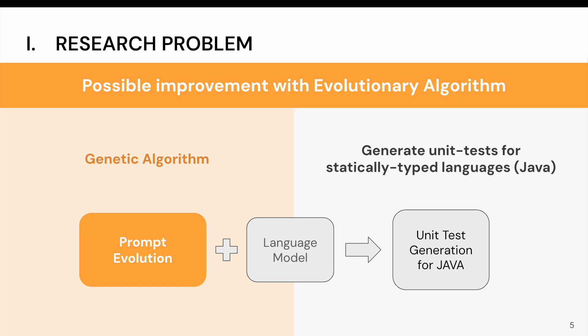our goal of this project is to automate the process of prompt optimization using evolutionary algorithms and apply this method to a specific problem in search-based software engineering, unit test generation. Our primary focus will be on generating unit tests for statically typed languages, specifically Java.